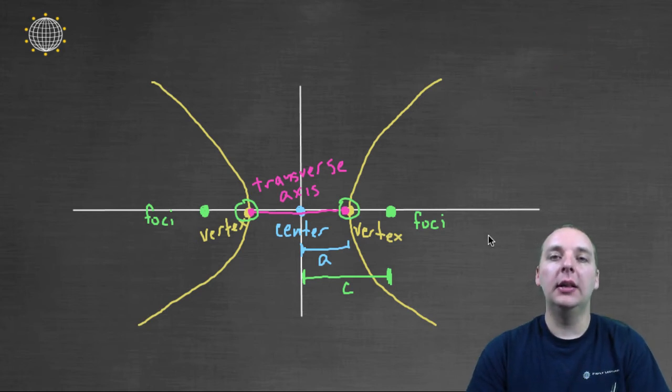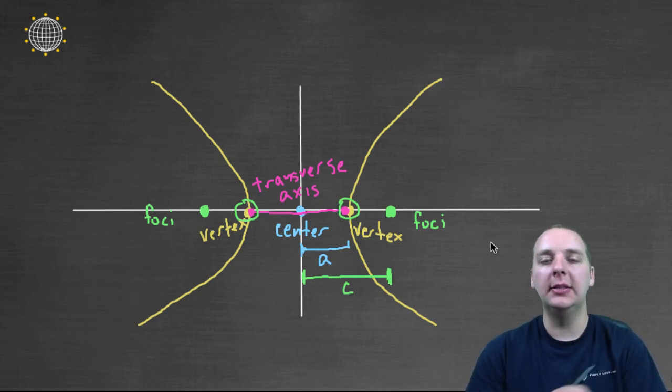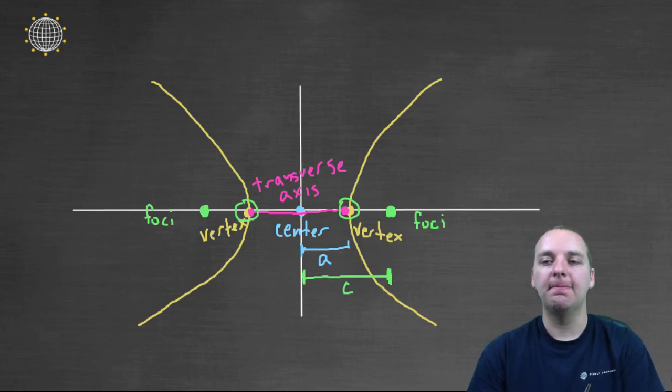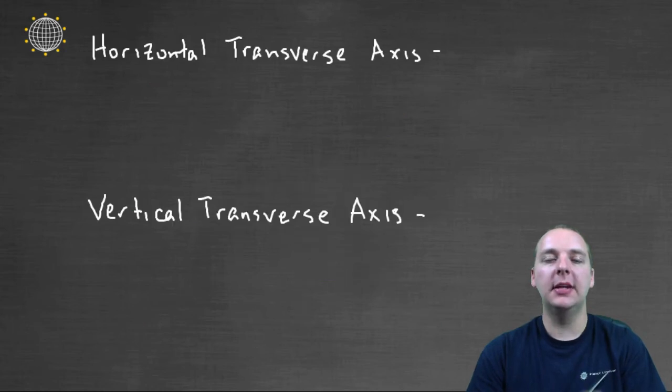Now some letters that we're going to have in our formula coming up soon. You might remember the H, the K, the A, the B, the C, and those sorts of things that we had for like ellipses. The A is going to be the distance from the center to the vertex. The C is going to be the distance from the center to the foci.